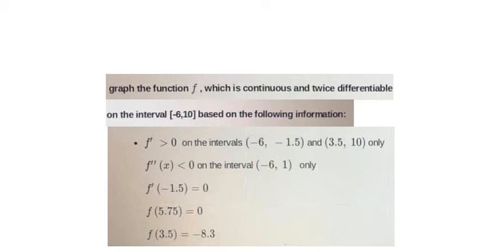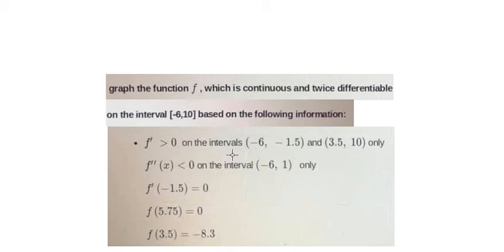Hello everybody. Today I will talk about calculus. Here is the question: the graph of the function f, which is continuous and twice differentiable on the interval from minus 6 to 10, is based on the following information. The first derivative is positive on the intervals from minus 6 to minus 1.5, and from 3.5 to 10 only.